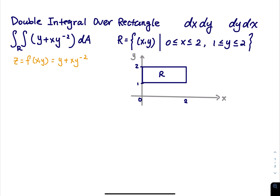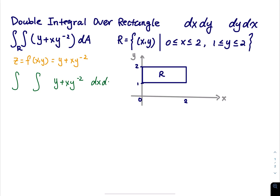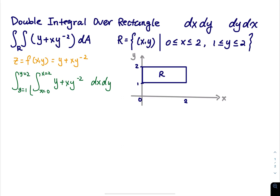We set up the double integral. I'm going to do a dx dy integral first. The integrand is y plus xy to the negative 2, and we integrate dx dy with x from 0 to 2 and y from 1 to 2. We do the dx first, so the outer integral from 1 to 2 stays, and we evaluate the inner integral.